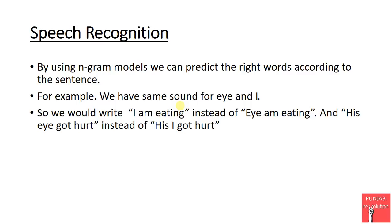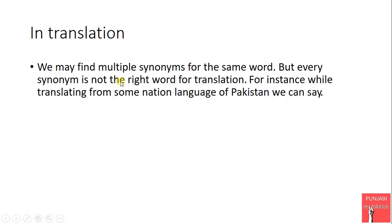Similarly, if someone says 'his eye got hurt,' the correct word here is 'eye' — the part of the body. So from the N-gram model we can easily identify the right word in a given place in the sentence where two words have the same sound.